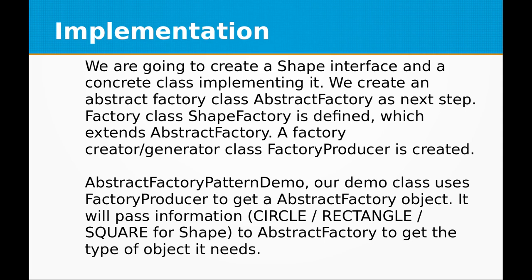Now let's look at the implementation of the Abstract Factory pattern. We are going to create a Shape interface and a concrete class implementing it. We create an abstract factory class AbstractFactory. Next, a factory class ShapeFactory is defined which extends AbstractFactory. A factory creator generator class FactoryProducer is also created. Our demo class uses FactoryProducer to get an AbstractFactory object. It will pass information — circle, rectangle, square — for shape, to get the type of object it needs.